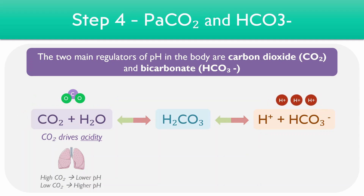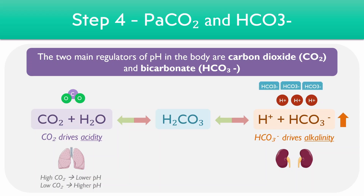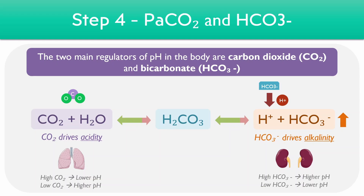At the opposite end of the equation, bicarbonate drives alkalinity and is generally controlled by the kidneys filtering and reabsorbing bicarbonate. When there's an increase in the concentration of bicarbonate ions, it forces the equation to the left-hand side, giving us fewer hydrogen ions as a result. We can think of the bicarbonate ions as mopping up the remainder of the hydrogen ions, and because this leads to a reduction in hydrogen ions, it leads to more alkaline conditions. To summarize: a high bicarbonate level leads to a higher pH, and a low bicarbonate level leads to a lower pH.